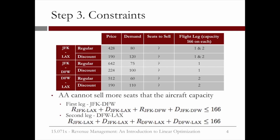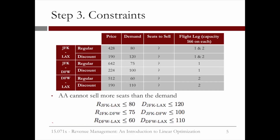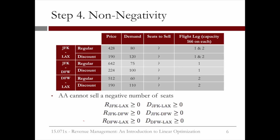Like before, we have two types of constraints: capacity constraints and demand constraints. For the capacity constraints, the airline shouldn't sell more seats than the capacity of the plane for each leg of the trip. So we need two capacity constraints — one for the New York to Dallas leg, and one for the Dallas to LA leg. Note that the New York to LA passengers have to be counted on both legs of the trip. We also need six demand constraints, one for each type of ticket. The number of seats sold should not exceed the forecasted demand for each type. And lastly, we have non-negativity constraints to prevent the variables from being negative.